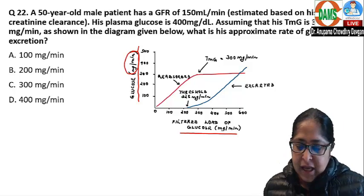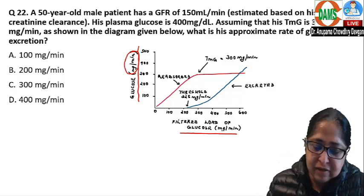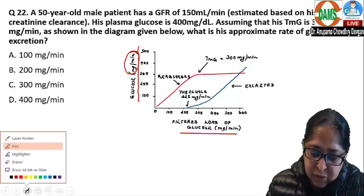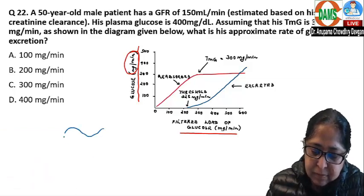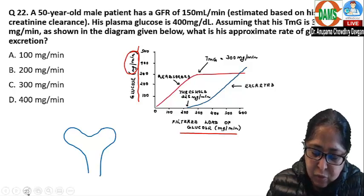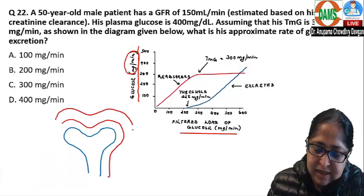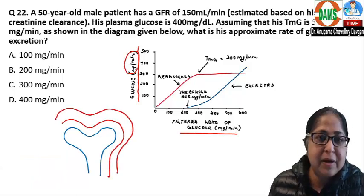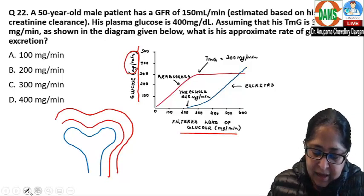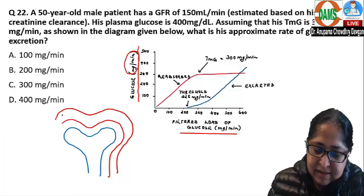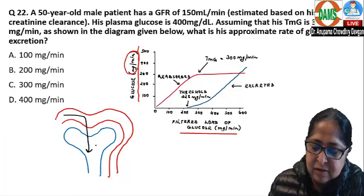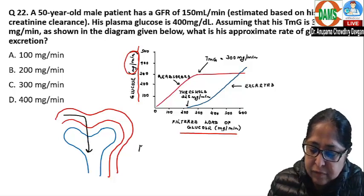First, how do you calculate the filtered load? The filtered load of any substance is a rate — it is per unit time. To calculate it, we use the formula: filtered load equals GFR multiplied by the plasma concentration of the substance.